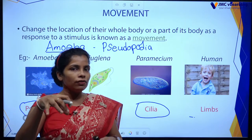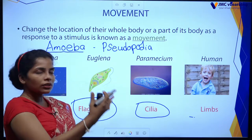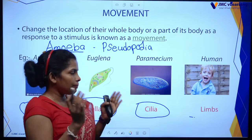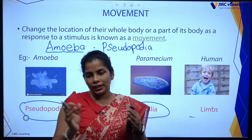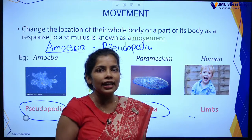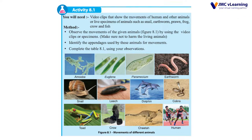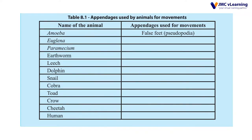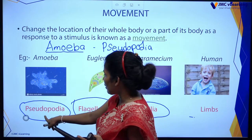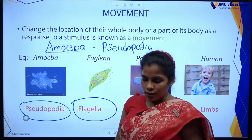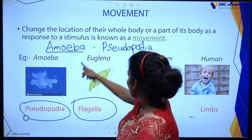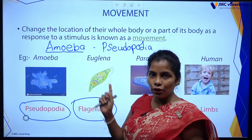Now we have the basic idea. Turn to page 90 in your textbook — there is Activity 8.1. There is a table with the name of the animal and the appendages used for locomotion. The first one is done for you: Amoeba uses pseudopodia. You can fill in the remaining examples.